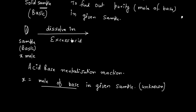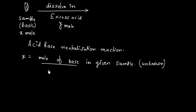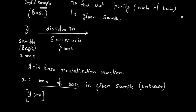Let us say we are dissolving in y moles of acid. So y is the moles of acid we have taken, and y is in excess — meaning y is greater than x. In that case, all the base will be neutralized by the acid, and some acid will be left because we have taken it in excess.